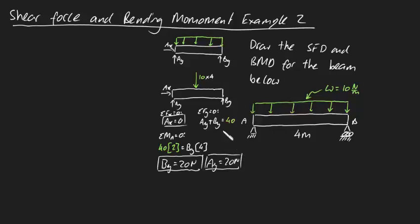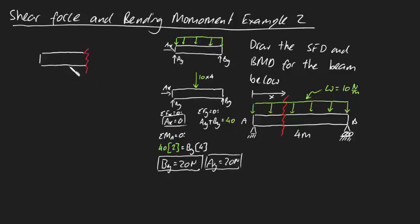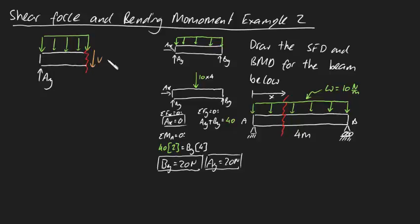Now we're ready for the harder part of this problem. I'm going to make a cut selection along this part of the bar at a distance X from the left support. Let's draw our free body diagram for this cut section. We've got our reaction force Ay, which we found to be 20 Newtons. We've got our uniformly distributed load acting over this section, which has a length of distance X. We've also got our internal shear force V and our internal bending moment M, which we're trying to find.